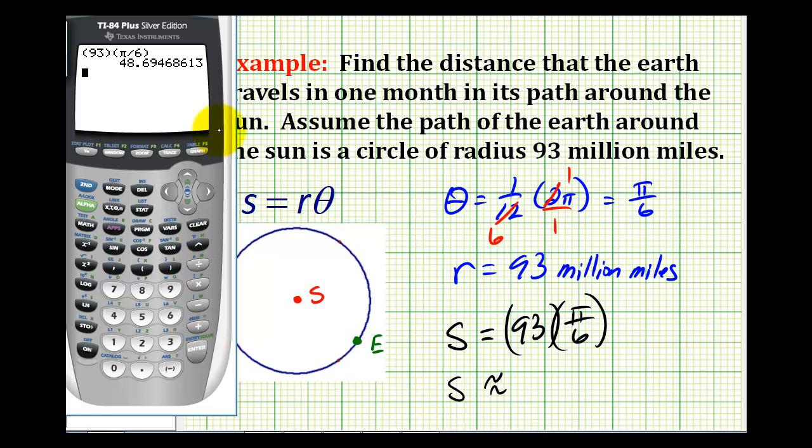We have 93 times pi over six. So the distance the earth would travel in one month would be approximately 48.7 million miles.